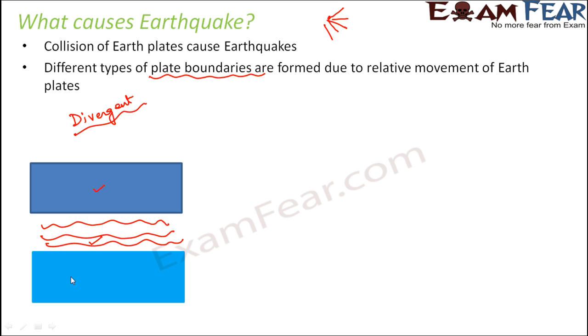Why are these called plate boundaries? Because in all these collisions between the plates, the boundaries are the most impacted. So whenever two plates collide, whatever is formed is called a plate boundary.